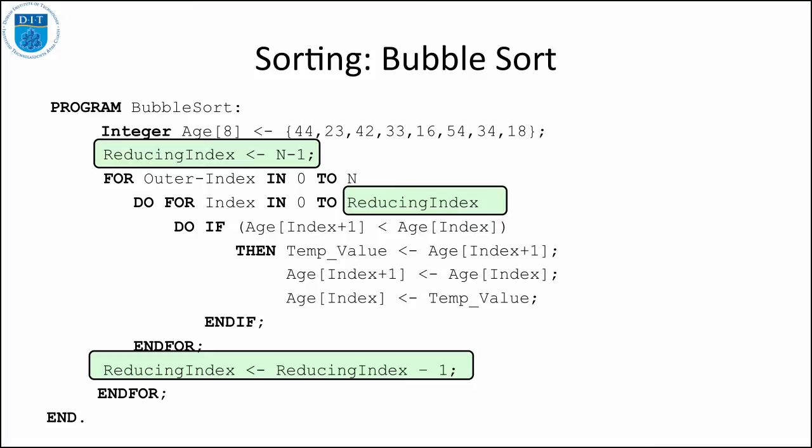So then the next pass we go from 0 to n-2, the next pass 0 to n-3, the next pass 0 to n-4, the next pass 0 to n-5. So that whole green triangle we saw there, we don't need to do the comparisons on that because that's already taken care of.